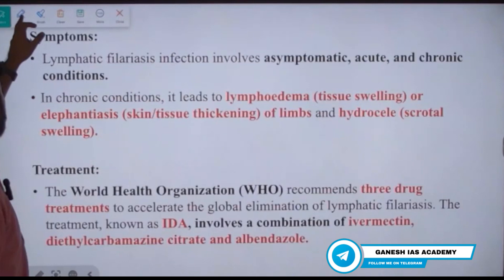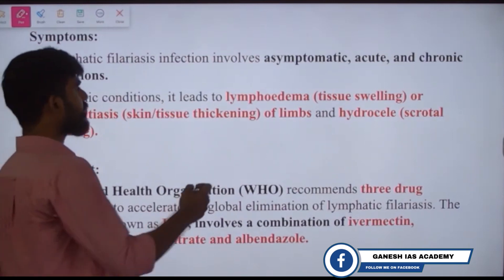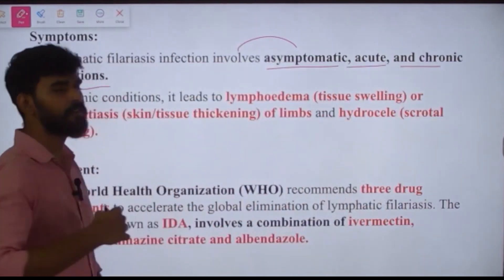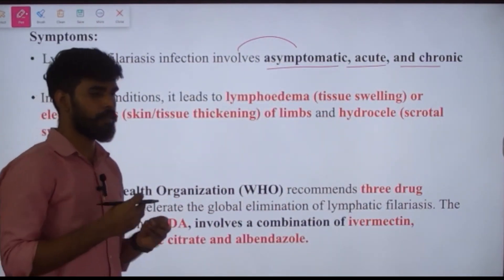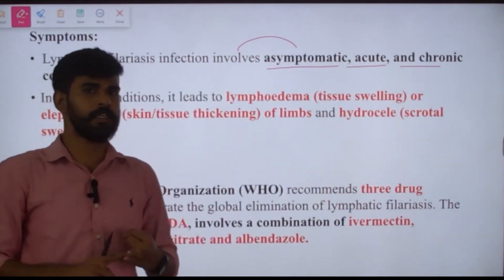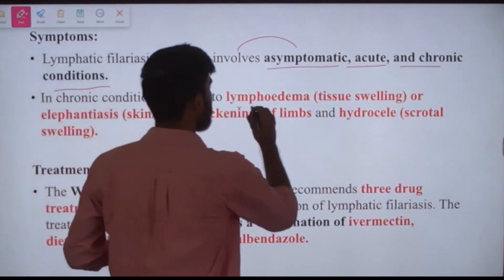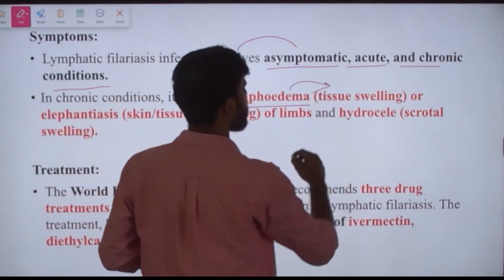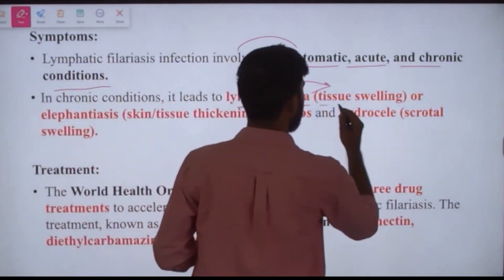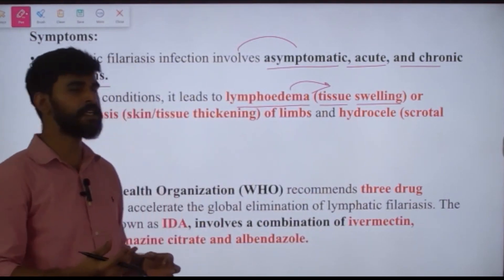Regarding symptoms: the disease may be asymptomatic. Acute and chronic conditions will have different symptoms. In chronic conditions, it leads to lymphedema, which means swelling — specifically tissue swelling affecting the lymphatic system of the body.